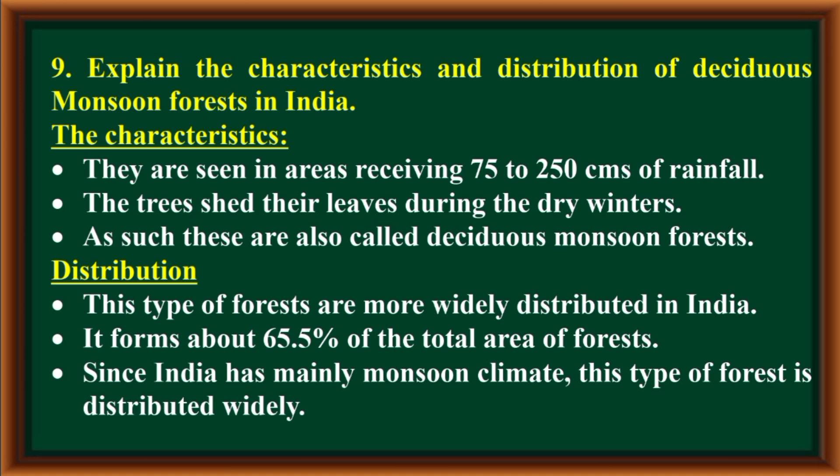Distribution: This type of forest is more widely distributed in India. It forms about 65.5% of the total area of forests. Since India has mainly a monsoon climate, this type of forest is distributed widely.